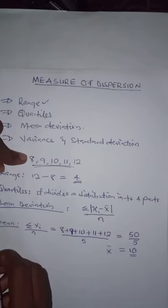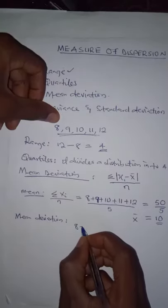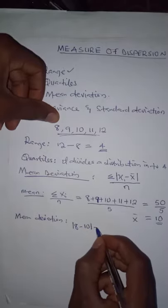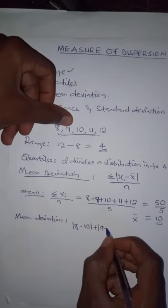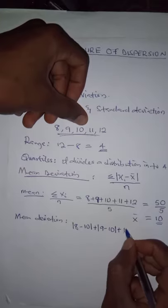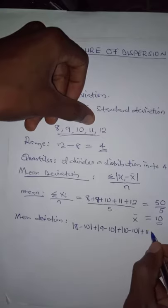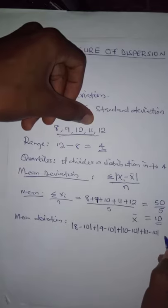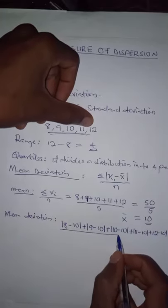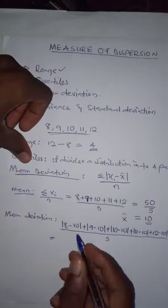We are going to apply the mean deviation formula for ungrouped data. We compute: |8 − 10| + |9 − 10| + |10 − 10| + |11 − 10| + |12 − 10|, all divided by 5. Now, 8 minus 10 is negative 2, and in absolute value that is positive 2. Then 9 minus 10 is negative 1, which in absolute form is positive 1.